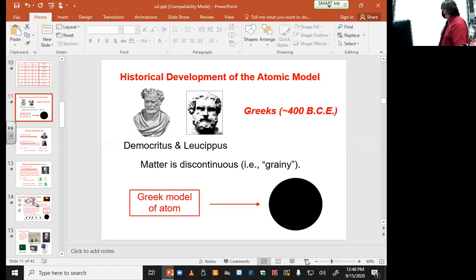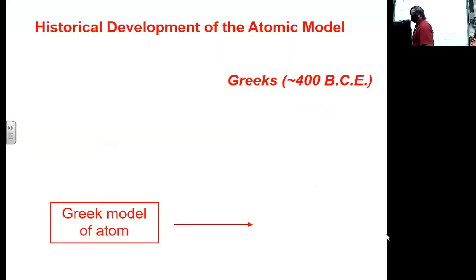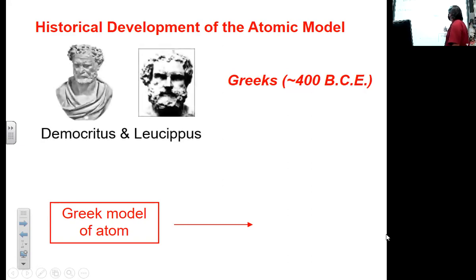So we're going to start off with the first spot, which is the Ancient Greeks. The Ancient Greeks didn't know anything about modern chemistry, so they didn't have the tools that we have today. When I talk about the Ancient Greeks, I'm not necessarily talking about scientific method. What I'm talking about really is philosophy or thought processes.